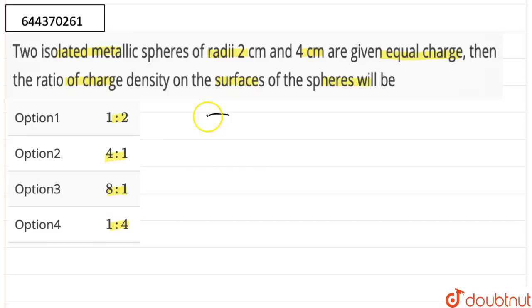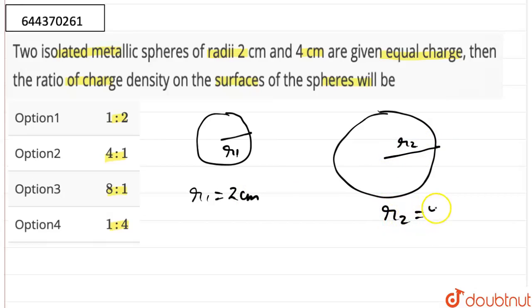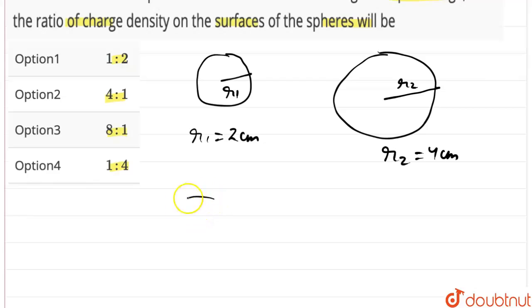Two spheres, let us say these are two spheres, one having radius r1 where r1 equals 2 centimeters and another one having radius r2 where r2 equals 4 centimeters. Now as we know, the surface charge density is given by the charge divided by the surface area.